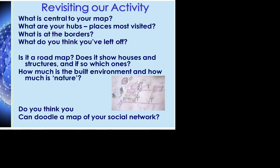I want to ask you to transpose Granovetter's ideas to geographical space. When you think about what you've drawn, what are your hubs? If this were your check-in app during COVID, the places you checked in the most are places you have strong ties to. Then ask: what are the borders of your map — where does the region as you imagine it end? When you begin to think about what is absent from that map, that's also interesting. If you don't go to temple or church, you probably didn't put that there. If you've had no interaction with police or hospitals, those are probably absent too.